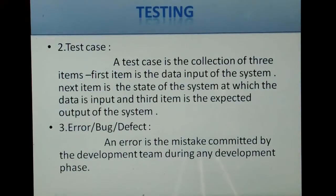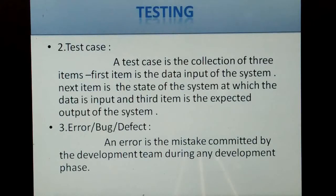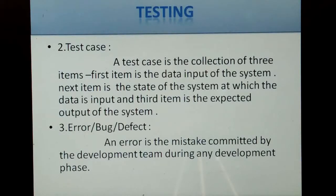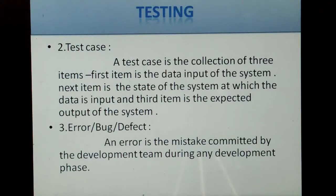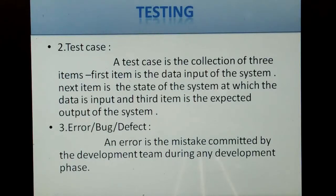Next, error, bug, and defect. What is the main work of testing? It is to identify the error. An error is the mistake. Error means when we are typing a program, a mistake happens. That mistake is the error. We can also call it a bug or a defect.